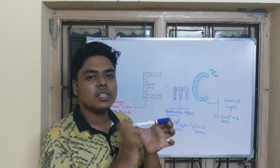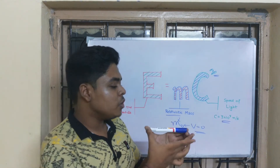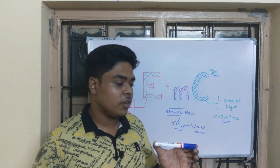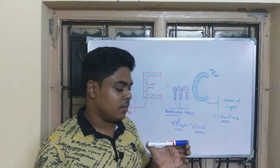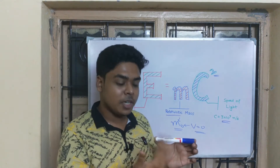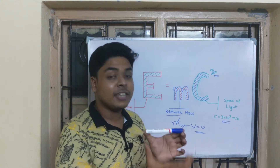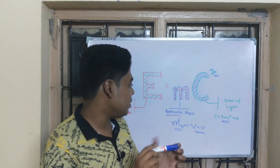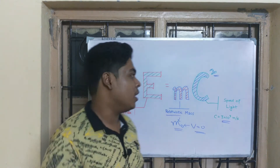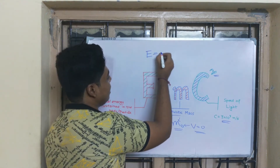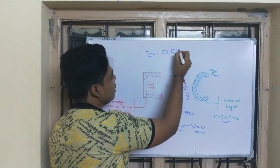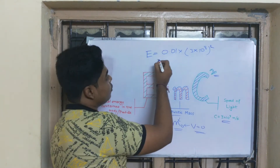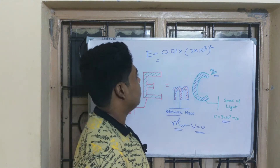Take 10 grams, which is 0.01 kg. To convert this mass completely to energy, we write E = mc² = 0.01 × (3 × 10⁸)². Let's calculate how huge this is.